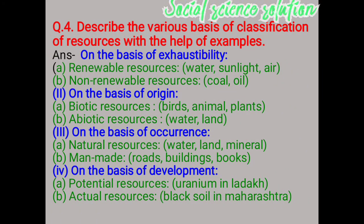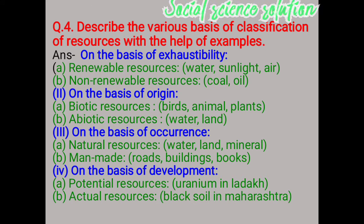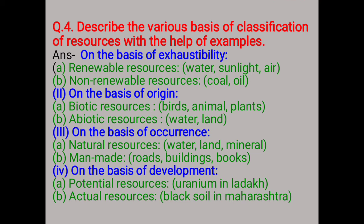Describe the various bases of classification of resources with examples. On the basis of accessibility: renewable resources (water, sunlight, air) and non-renewable resources (oil). On the basis of origin: biotic (birds, animals, plants) and abiotic (water, land). On the basis of occurrence: natural resources (water, land, minerals) and man-made resources (buildings, roads). On the basis of development: potential resources (uranium in Ladakh) and actual resources (black soil in Maharashtra).